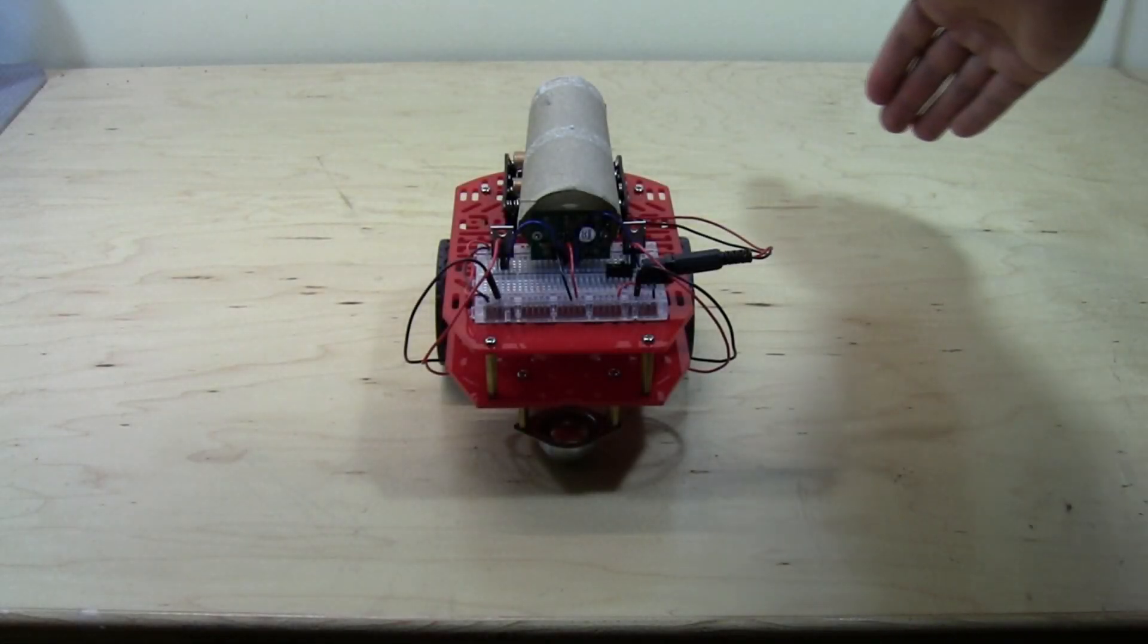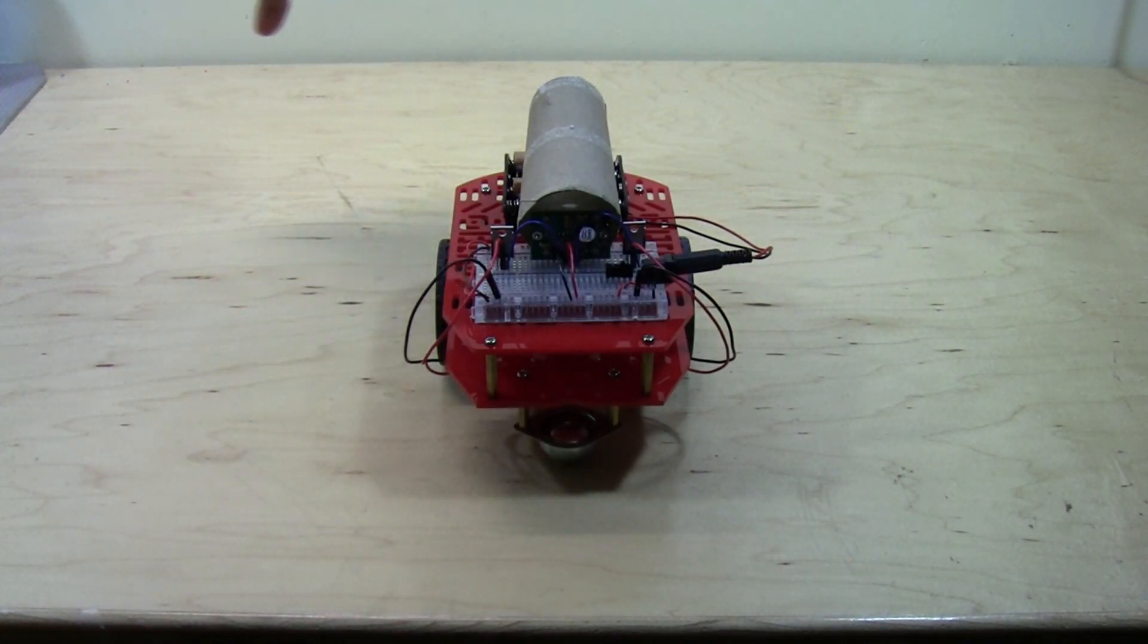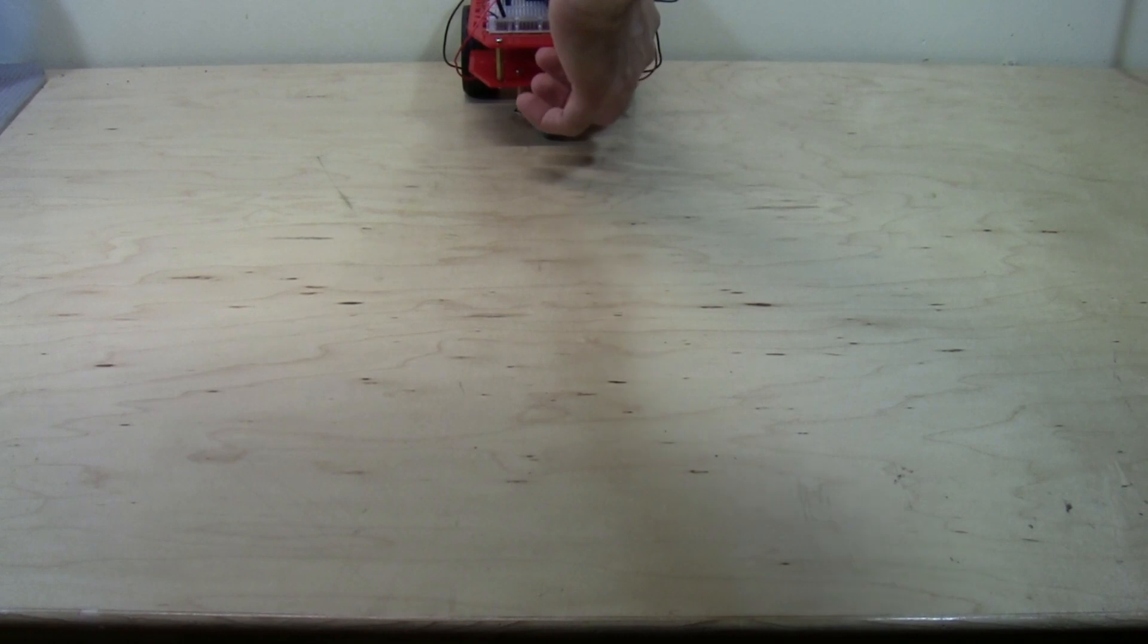Now you'll see that when I reset the robot, I can safely move my hands near its sides without setting it off, but if I move my hand in front of the robot, it still triggers the sensor and causes it to drive forward.